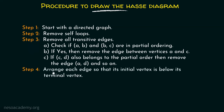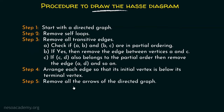Step 4: arrange each edge so that its initial vertex is below its terminal vertex, because all edges must be drawn from bottom to top. Step 5: remove all the arrows of the directed graph. That's the complete procedure to draw the Hess diagram.